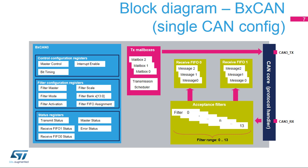This simplified block diagram of the BX CAN in a single CAN configuration shows its basic functional and control features. Three types of registers: control configuration registers, filter configuration registers, and status registers. Three transmit mailboxes are provided to the software for setting up messages. The transmission scheduler decides which mailbox has priority to be transmitted first.